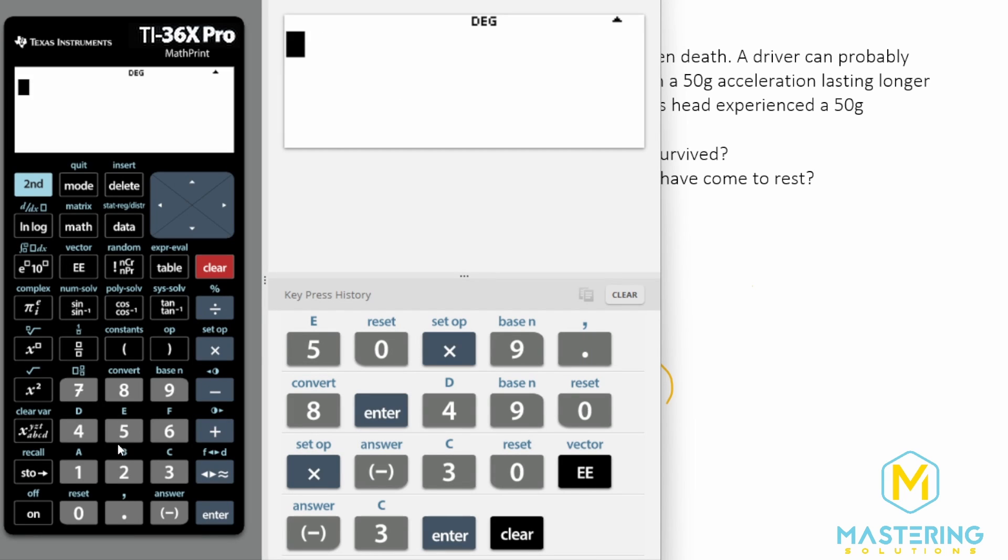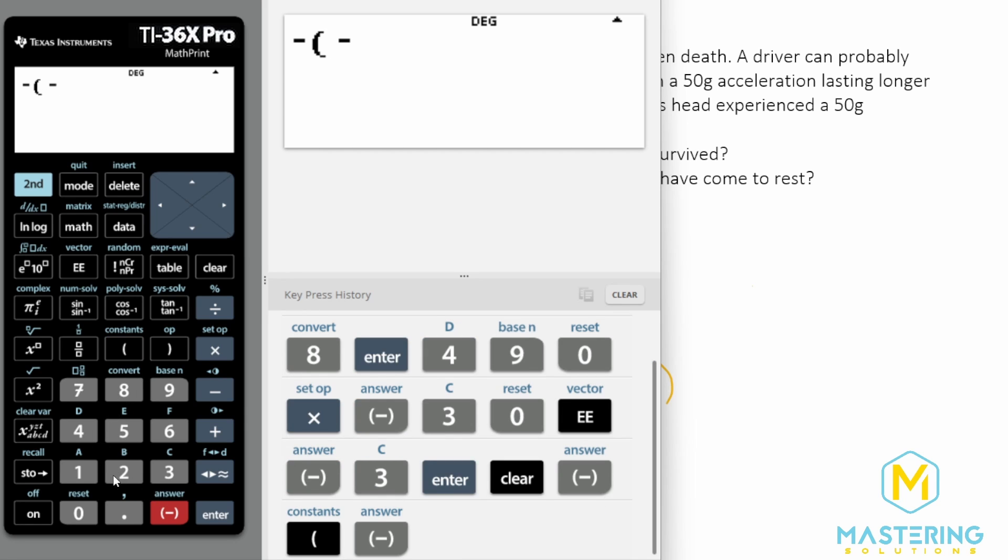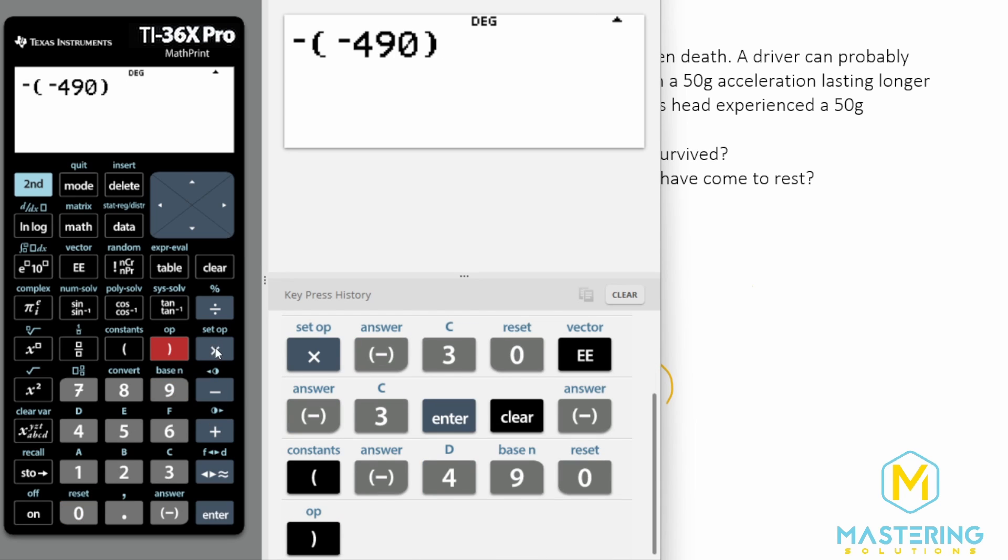Okay. So now when we plug this in, we have a negative and then the acceleration we said is slowing down. So we have a negative 490 meters per second squared times the time,